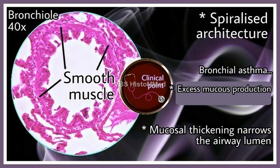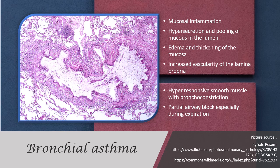This asthma histology slide shows mucosal inflammation, hypersecretion and pooling of mucus in the lumen, edema, thickening of the mucosa, increased vascularity of the connective tissue immediately below the basement membrane in the lamina propria, and hyper-responsive spiralized smooth muscle causing bronchoconstriction. All of this results in partial airway blockage, particularly exaggerated during expiration — which is why asthma cases have difficulty exhaling, as air becomes partially trapped.